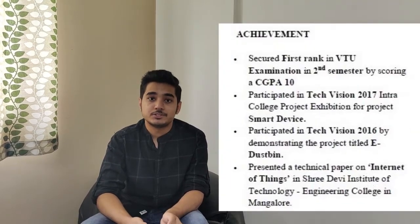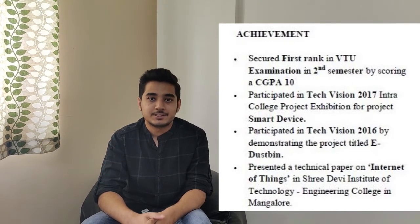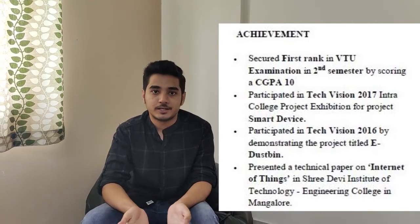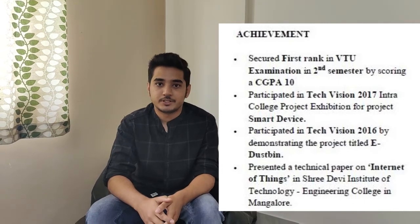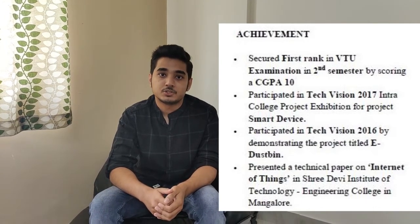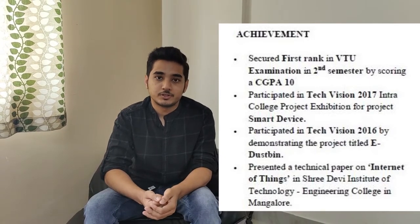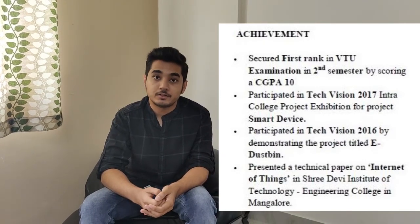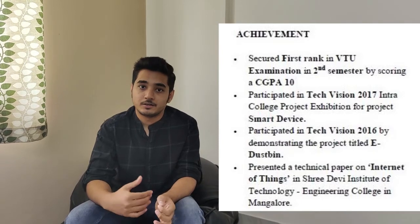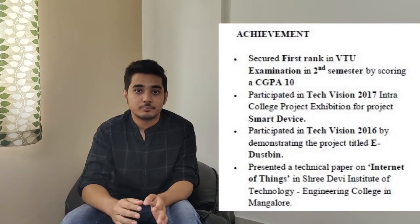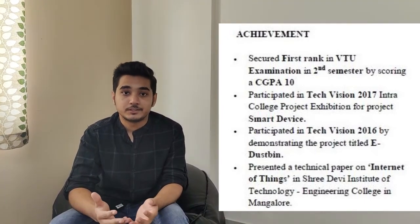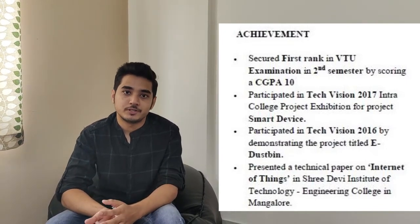The eleventh section covers your achievements, which can come in a wide variety. For example, I had an academic achievement of scoring a 10/10 CGPA in my B2 examination in the second semester. You might also have participated in technical events, paper presentations, or cultural events — but it should not be an in-college event; it should be a university-level event. If you won any prize, you can mention that as well.